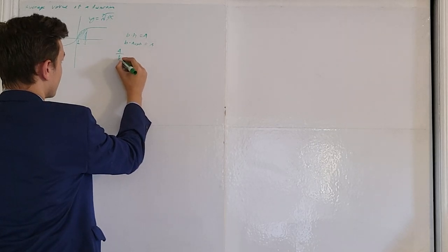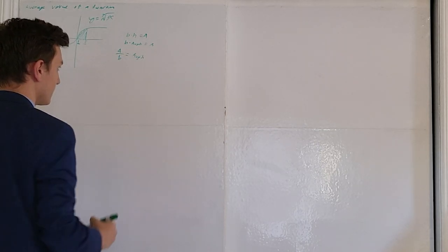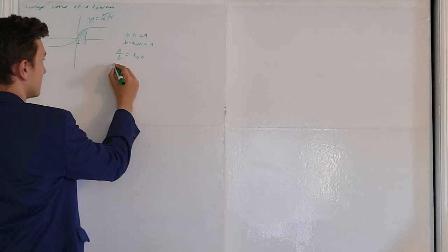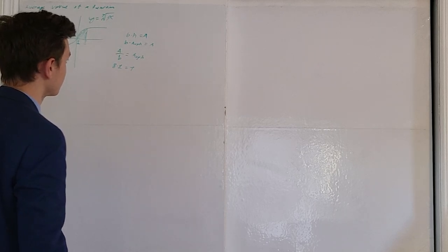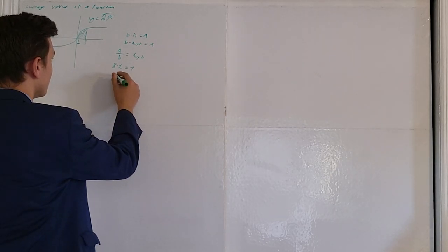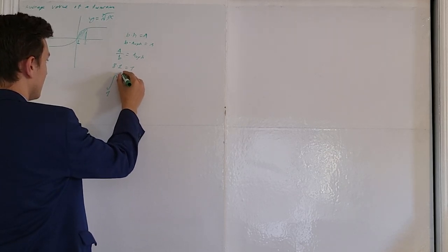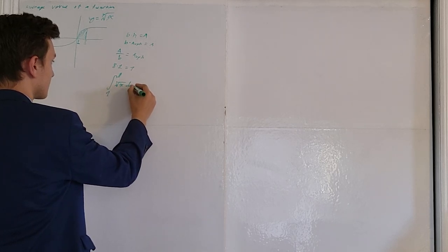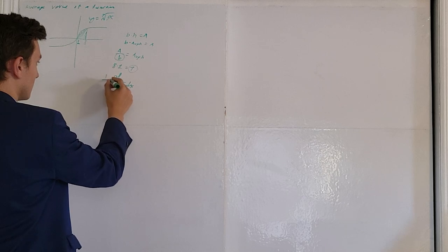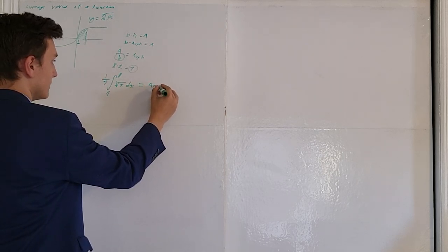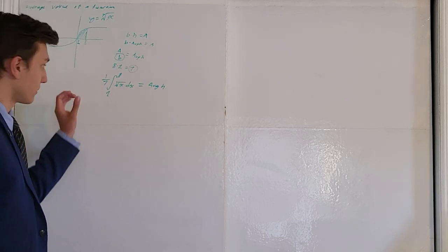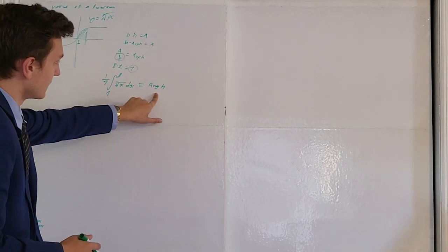If I take the area and divide it by the base, I get the average height of the function. We know the base — it's just 8 minus 1, so the base is 7. The area of this section is the definite integral from 1 to 8 of the cube root of x dx. Divide that by the total base length — multiply by 1 over 7 — and that equals the average height.